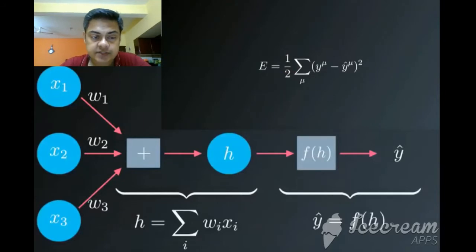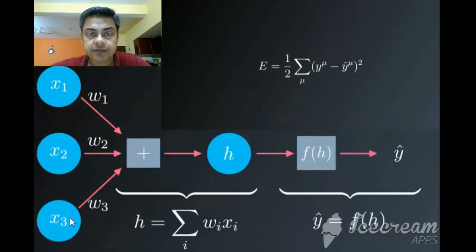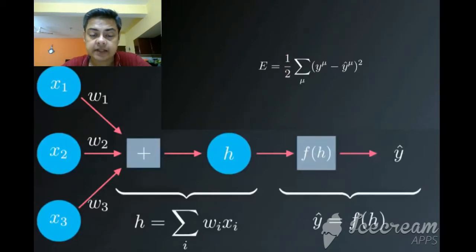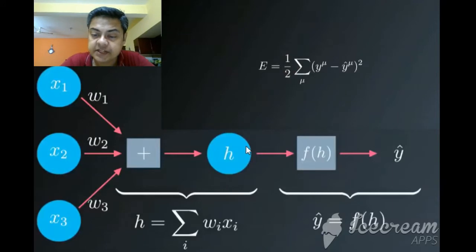First, we have three inputs x1, x2, and x3. Each of the inputs has three different weights: w1, w2, and w3. They come to one particular junction which is a summation, and if they are above the threshold or activation function, they proceed to the next level h.